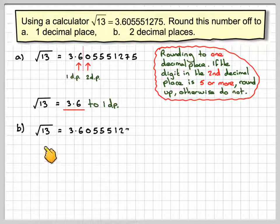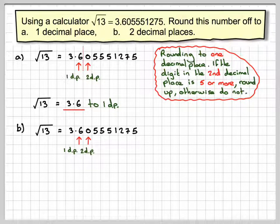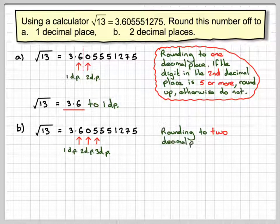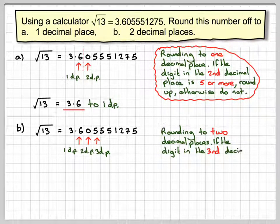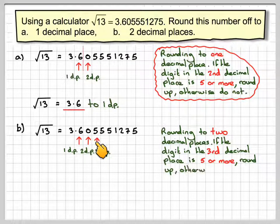Right, the square root of 13 now to two decimal places, where the 6 is the first decimal place, the 0 is the second, and that first 5 is the third. So rounding to two decimal places, if the digit in the third decimal is 5 or more, then we round up.